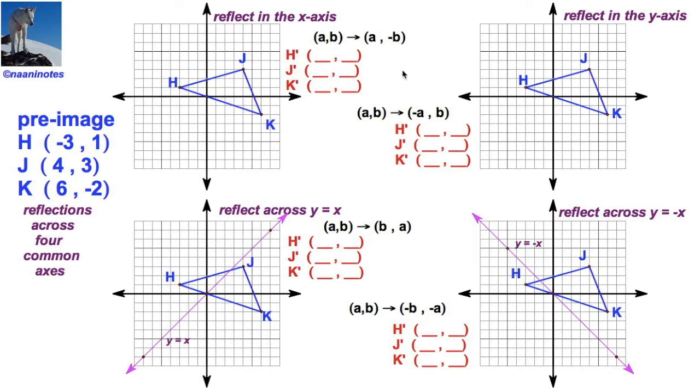I have a coordinate rule. AB maps to A opposite of B. Now, I've conveniently chosen these three vertices to be in different quadrants, so they'll come out a little different. Negative 3, 1. Well, when I map that using this rule, the negative 3 is going to stay the same. The opposite of 1 is negative 1.